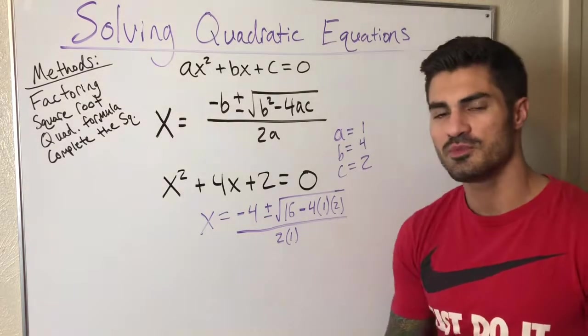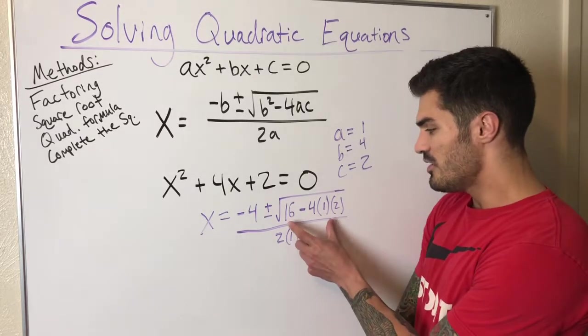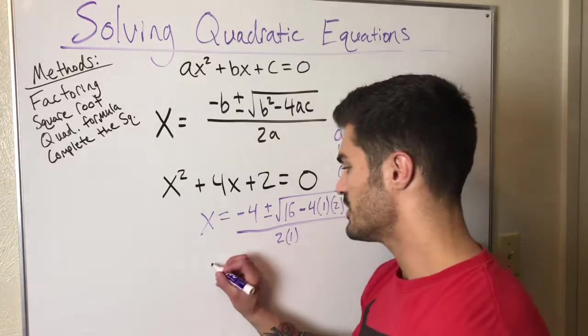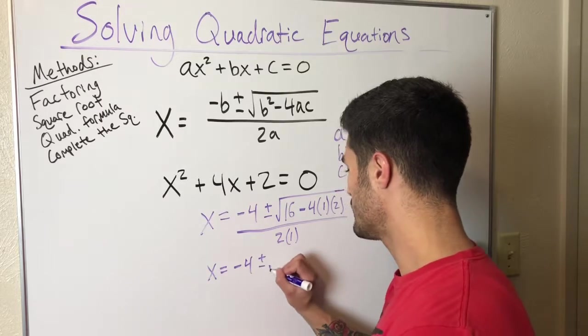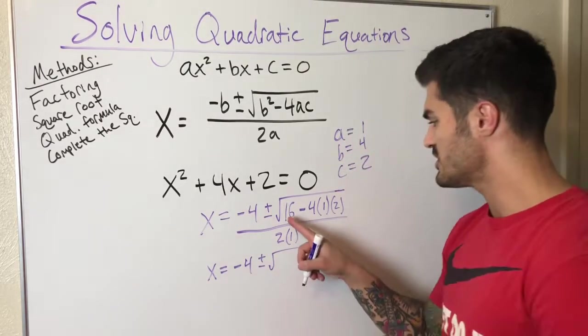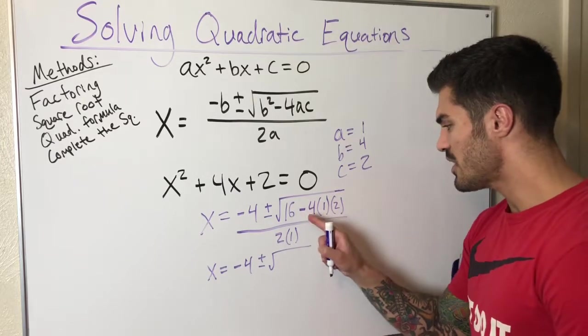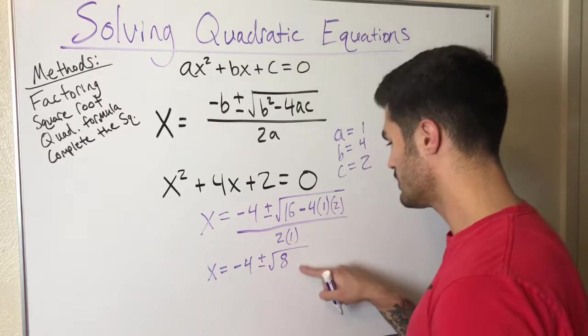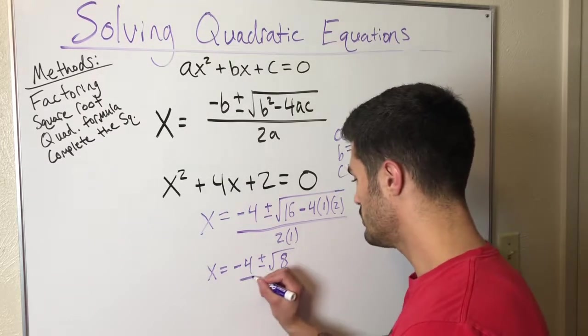These are technically my answers, but you always want to simplify as much as you can. I'm going to simplify everything under this radical. x equals negative 4 plus or minus square root of 16 minus 4 times 1 times 2. That's 16 minus 8, which is 8, so I'm left with 8 under the root and 2 on the bottom.